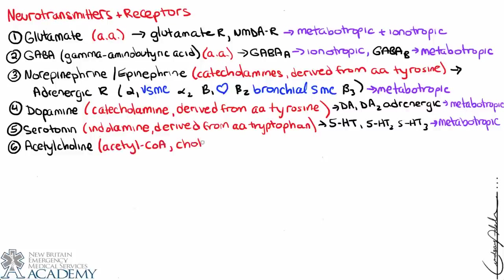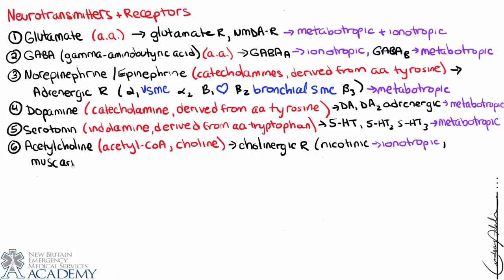Acetylcholine is synthesized from acetyl-CoA — an important metabolic chemical — and choline. Interestingly, when acetylcholine binds to its receptor, it is broken down by the enzyme acetylcholinesterase into acetyl-CoA and choline, and the choline is taken back up into the presynaptic membrane and recycled repeatedly. Acetylcholine binds to cholinergic receptors: nicotinic receptors use the ionotropic mechanism, and muscarinic receptors use the metabotropic mechanism, with subtypes like M1 and M2.